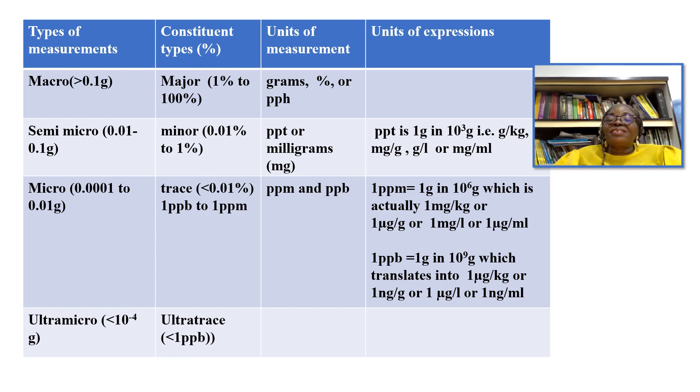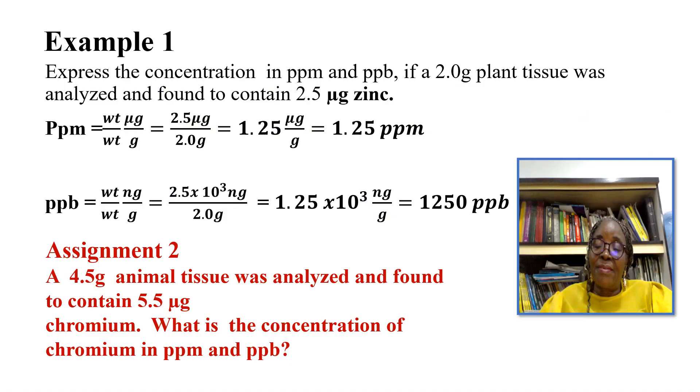So we are saying here that 1 ppm is equivalent to 1 milligram per liter or 1 microgram per milliliter. 1 parts per billion is 1 gram in 10 raised to power 9 grams, which translates into 1 microgram per kilogram or 1 nanogram per gram or 1 microgram per liter or 1 nanogram per milliliter. I have an example to present in the next slide.